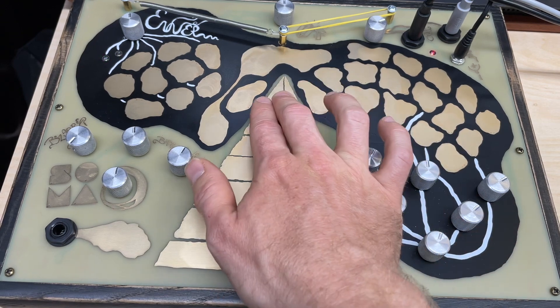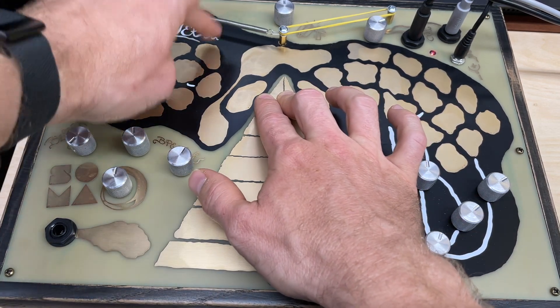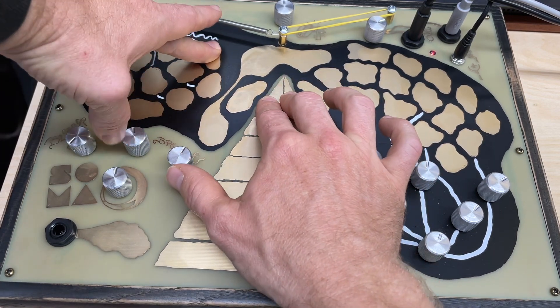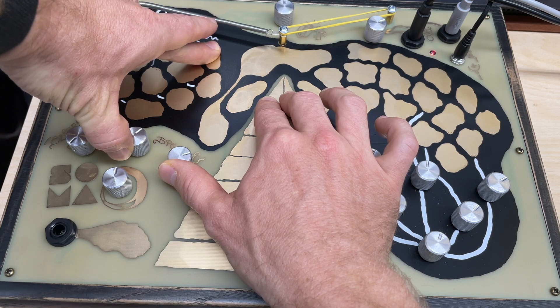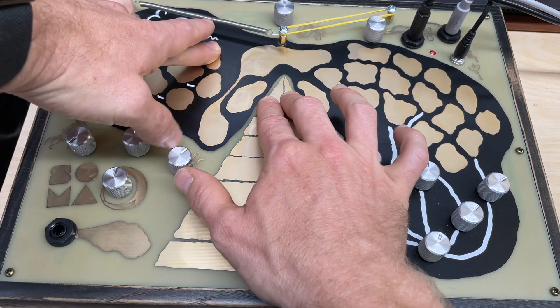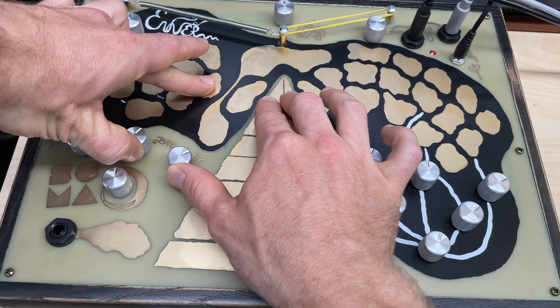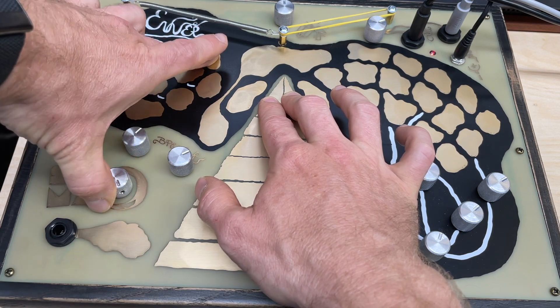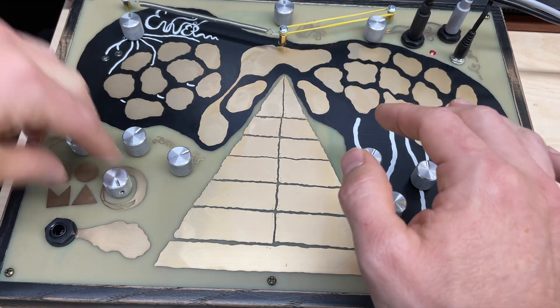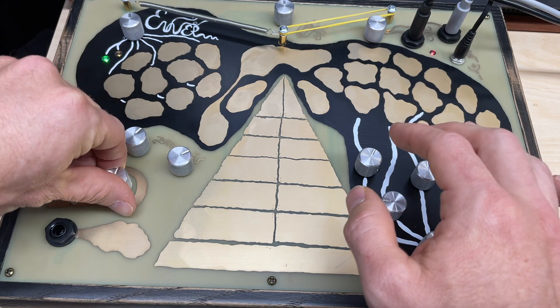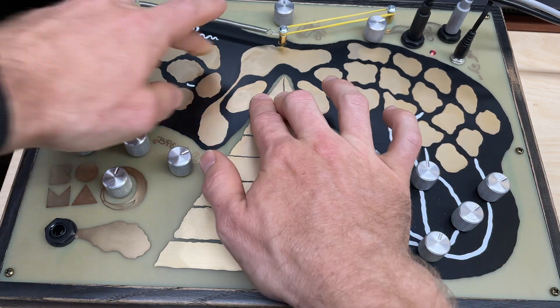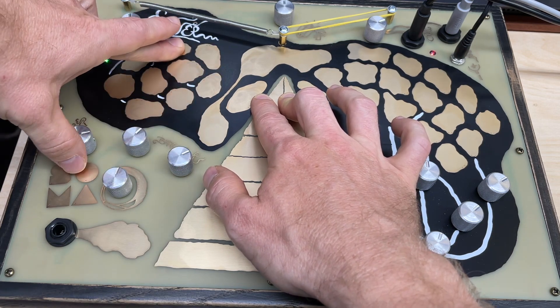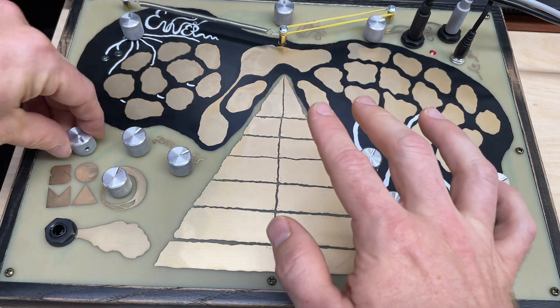Like all great Soma Labs instruments, we have lots of control over the delay. So I'm pushing the top two triangles. I have separate right and left time. I have a feedback knob, and it goes to 11. And I have modulation, which also goes to 11.